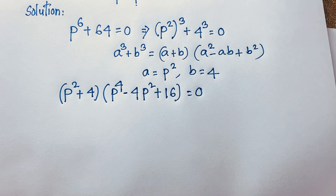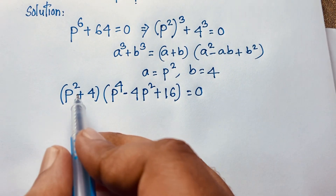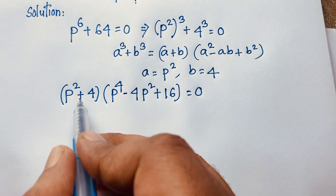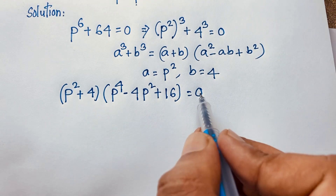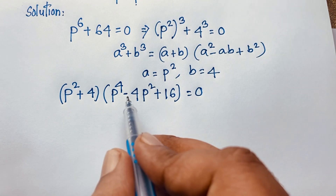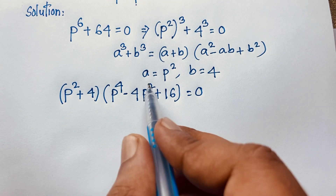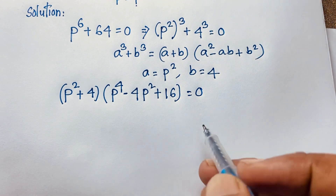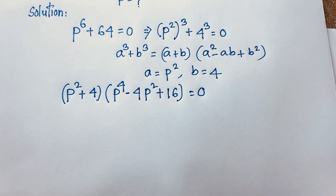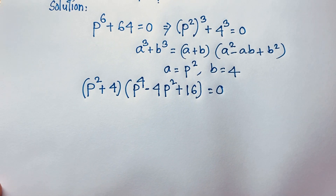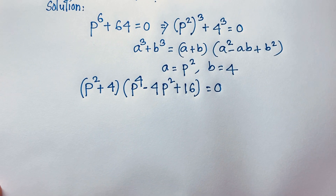Now we find two cases. Case one: p squared plus 4 is equal to zero. Case two: p to the power 4 minus 4p squared plus 16 is equal to zero.